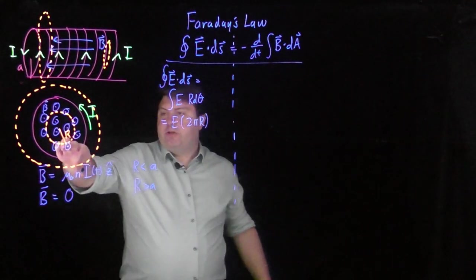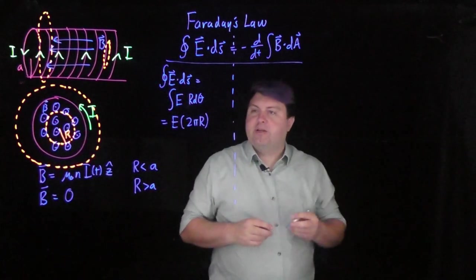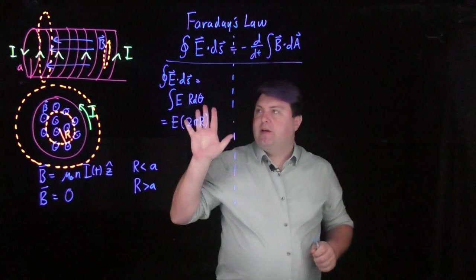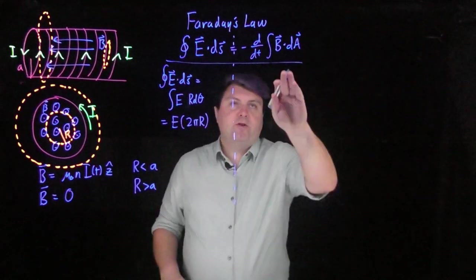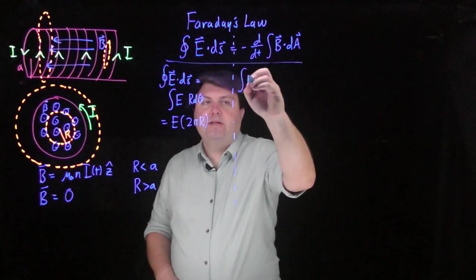So because we chose the loop that's going to have an electric field in the same direction as all this, everything's good with that. And then over on this side, we first want to find what the integral of B dot dA is.